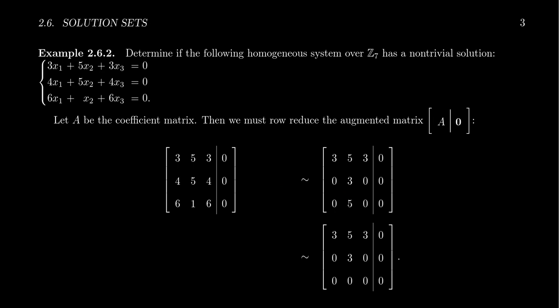So let's look at an example of such a thing. Let's consider the three-by-three linear system: 3x1 + 5x2 + 3x3 = 0, 4x1 + 5x2 + 4x3 = 0, and 6x1 + x2 + 6x3 = 0. This is clearly a homogeneous system like we've seen before. As most of our examples seem to be over the real number system, let's try something working mod 7. You notice our coefficients are only chosen as numbers between 0 and 6.